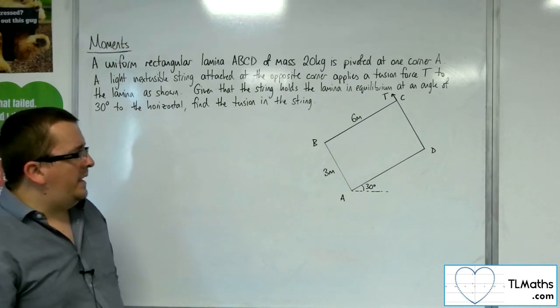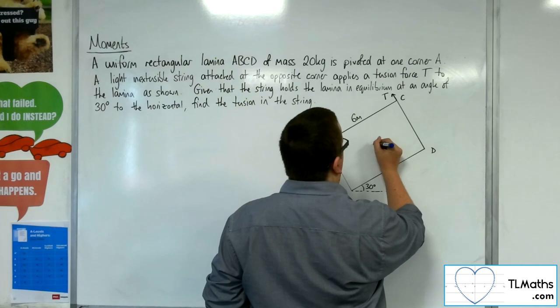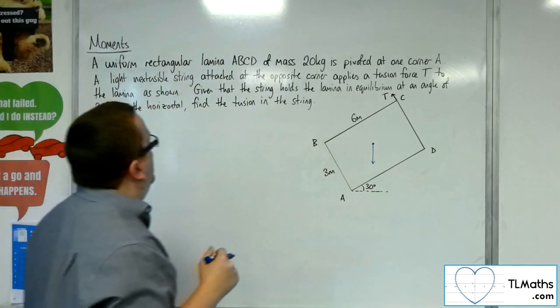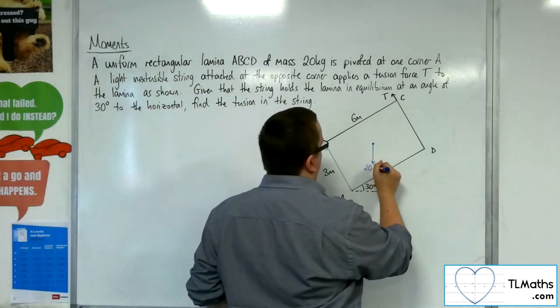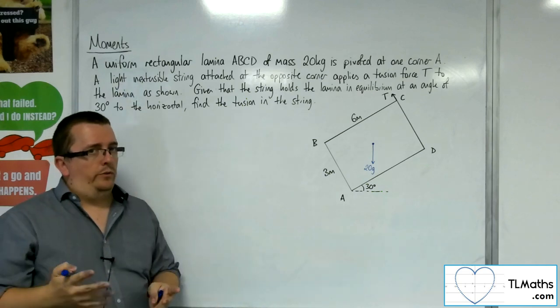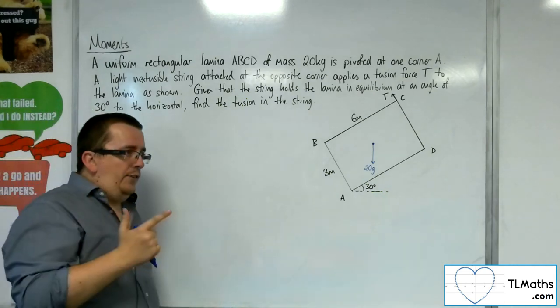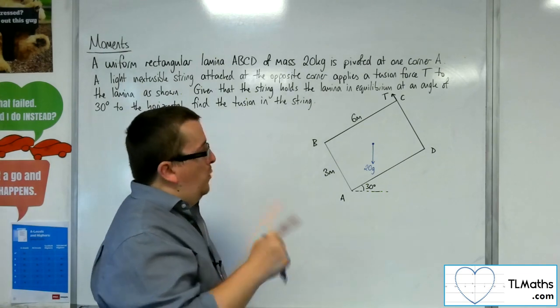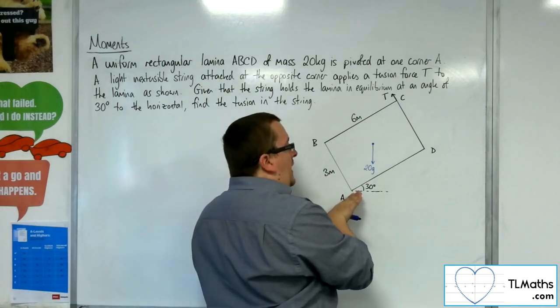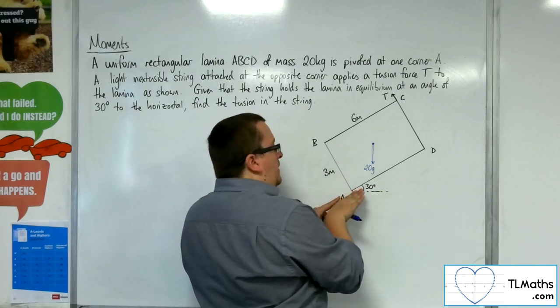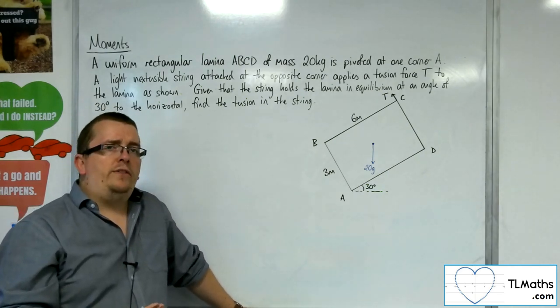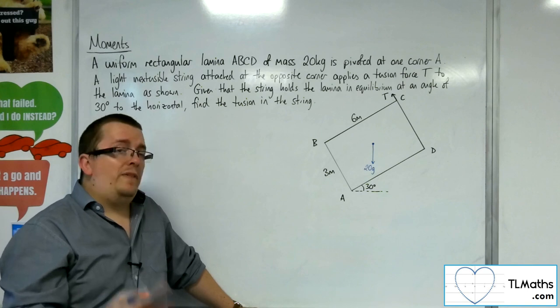What we want to think about is putting into our diagram the center of mass, so center of mass working vertically downwards at 20G. Now, when you're dealing with problems with laminars at angles, it is easier to look at and deal with rectangular laminars, looking at the base like a parallel to the plane and perpendicular to the plane approach that we used when dealing with inclined planes. That's what I want you to think about.